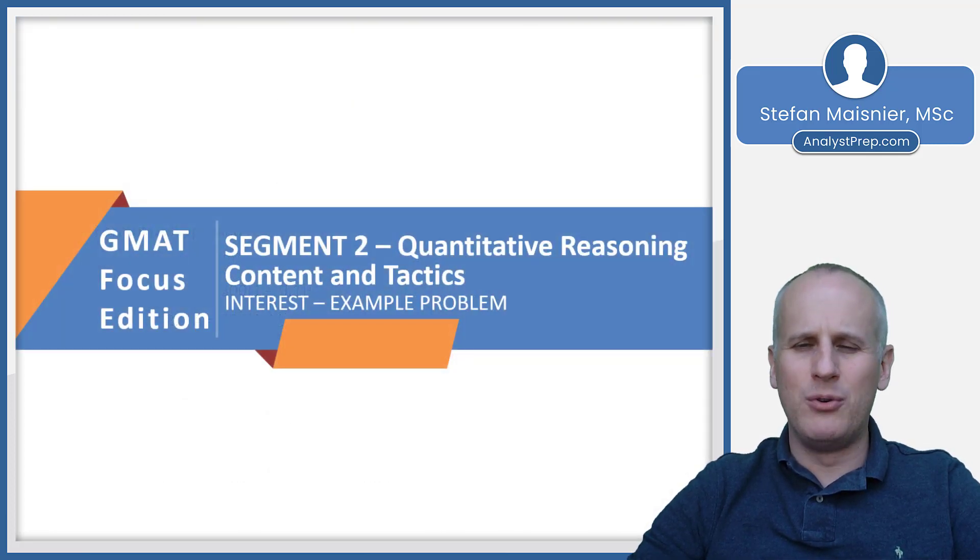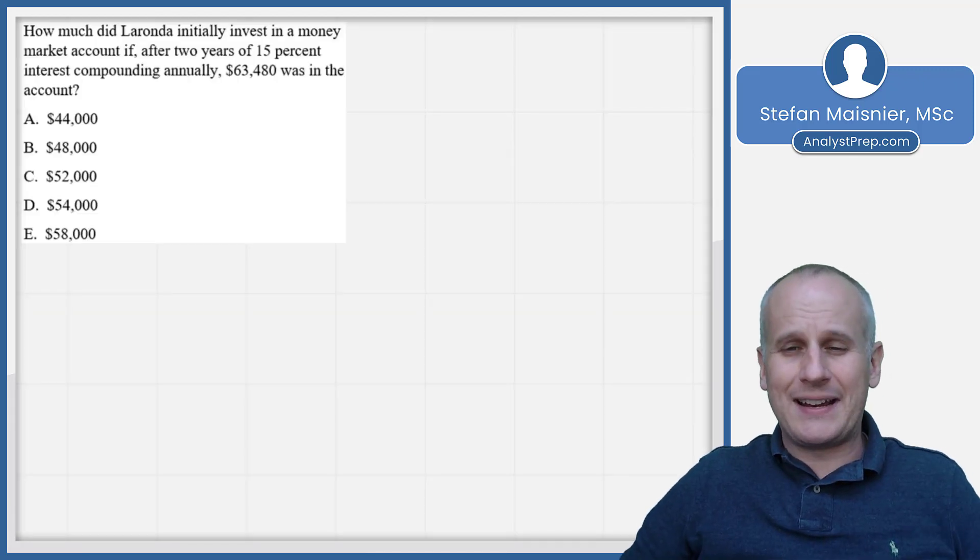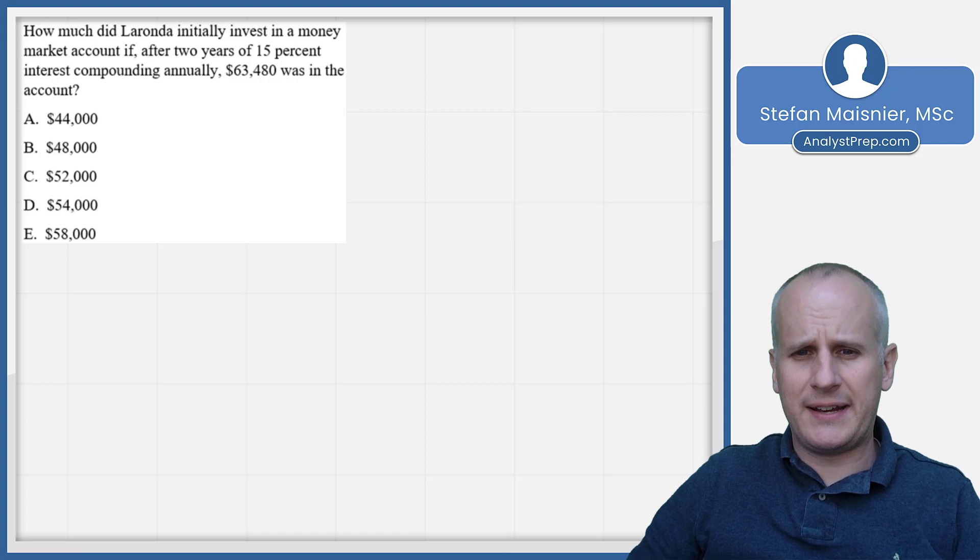Let's go ahead and move over to the whiteboard and take a look at how we can execute with interest problems potentially with a logical or alternative tactic as opposed to being subjected to these relatively onerous manual calculations, especially with that compound interest formula. If you have no calculator, as you will not on the quantitative reasoning section of the GMAT focus. So let's take a look at a sample problem solving question. And as always, we'll set up the scratch pad first.